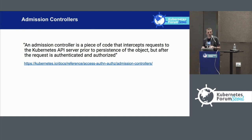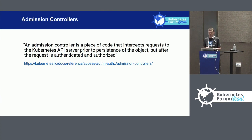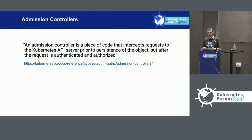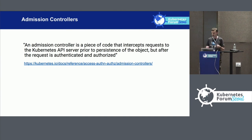The first admission controller is a mutating webhook, which allows it to change the resource — for instance, automatically adding required labels or defaults to a deployment. The second, which is more important for this talk, is the validating webhook. That will validate a resource and return yes or no, and if something is wrong, it will not persist that resource and you'll get an error message.